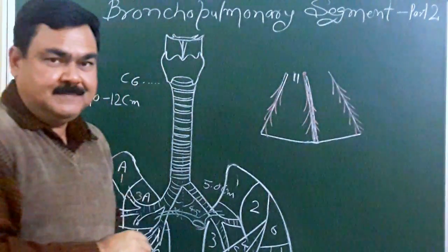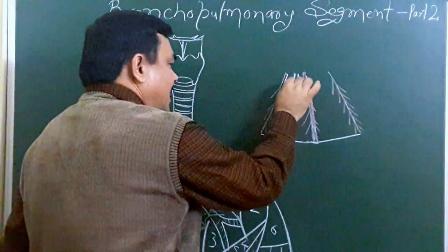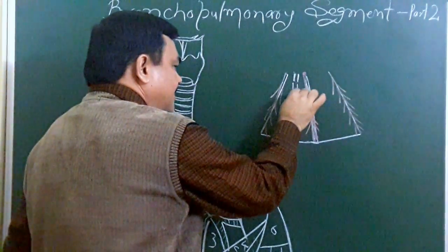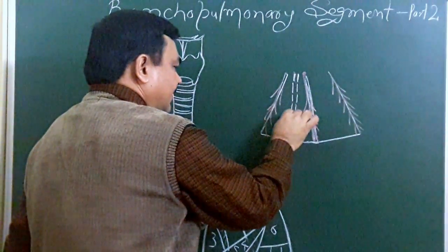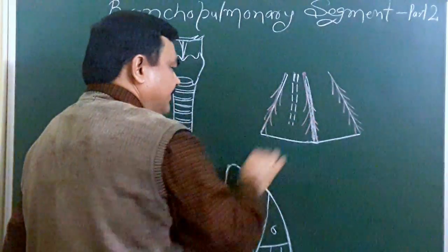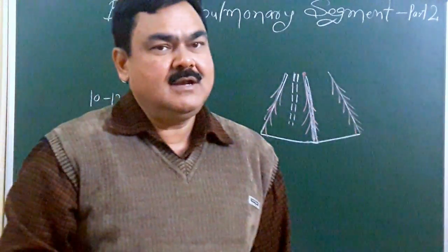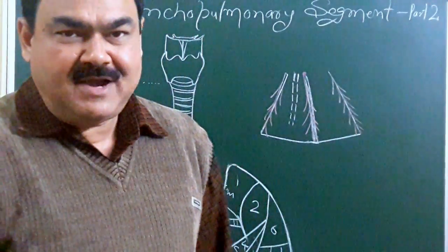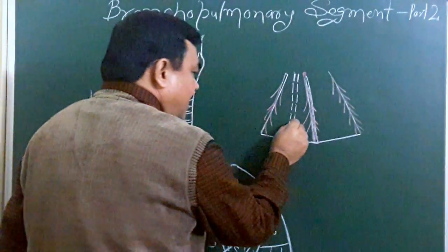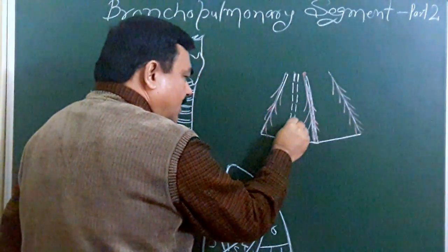Here is the tertiary bronchus. This tertiary bronchus divides into several divisions and forms the terminal bronchiole. The terminal bronchiole divides and forms the respiratory bronchiole. The respiratory bronchiole continues with the alveolar duct.